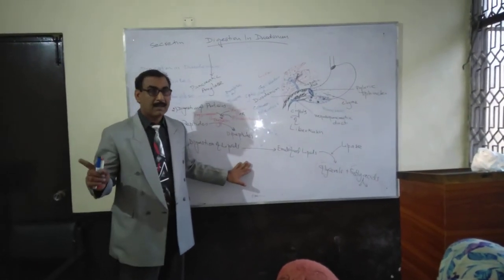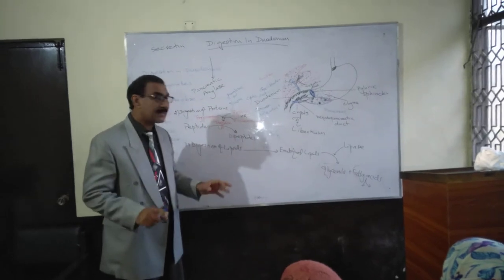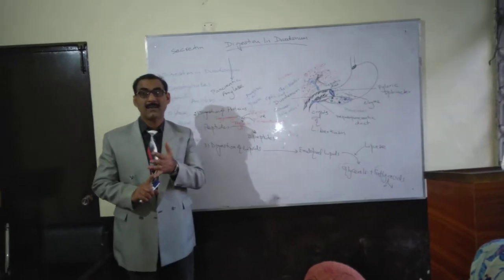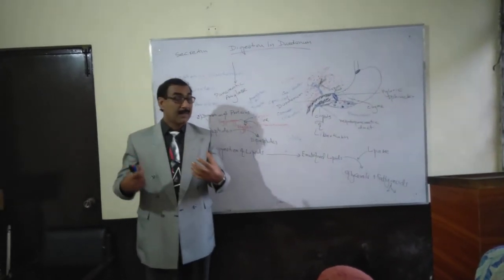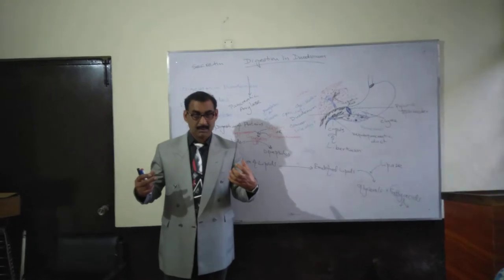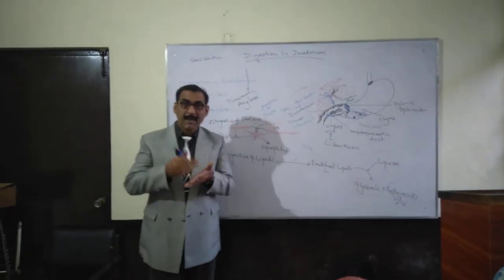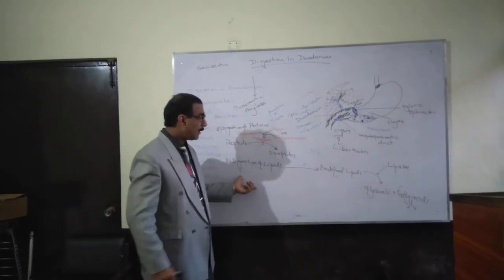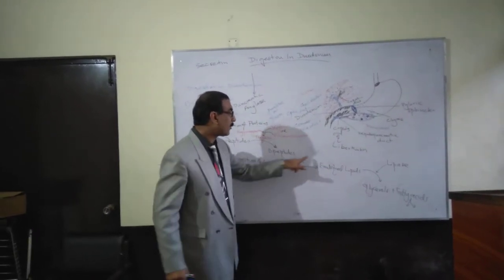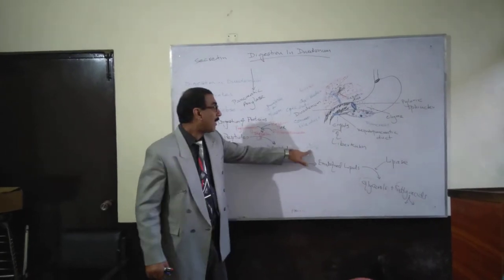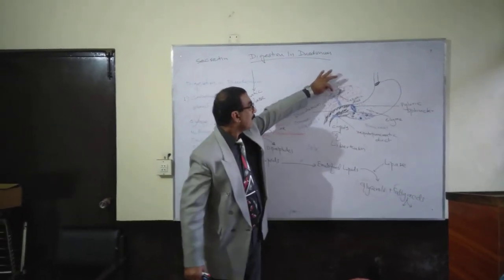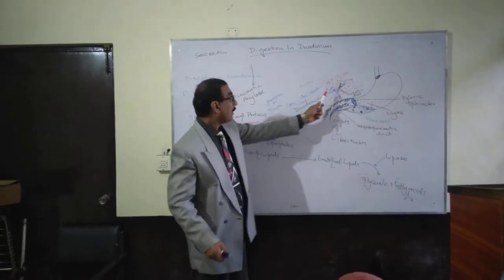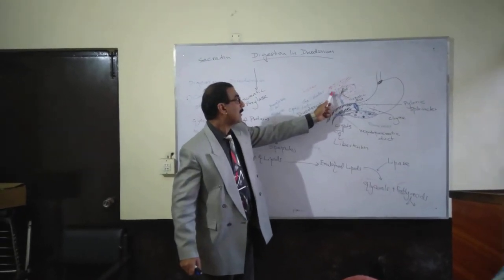Lipids are large molecules, as we have stated in biochemistry. Lipase cannot act directly upon large lipids, so these are first cut into small pieces — they are emulsified. These large lipids are emulsified by bile, which is produced in the liver cells.